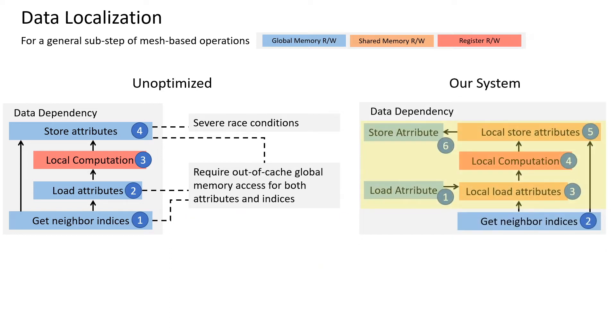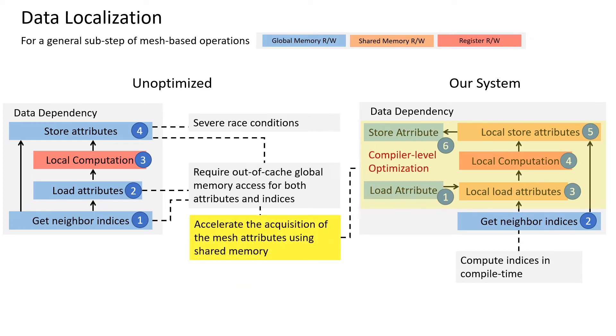We propose a novel compiler for mesh-based operations. Our system computes the neighbor indices in advance in compile time and saves them in global memory. We utilize shared memory only to accelerate the attribute access. Our compiler takes over the attribute data exchange between global and shared memory to ensure that most attributes are already cached before they are needed for computations. This memory management strategy also reduces data races when writing data back to global memory in batches.